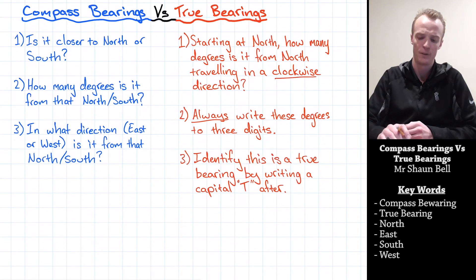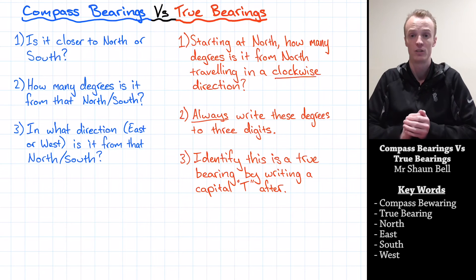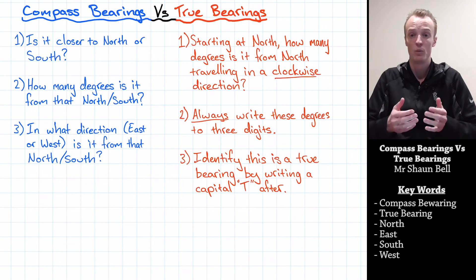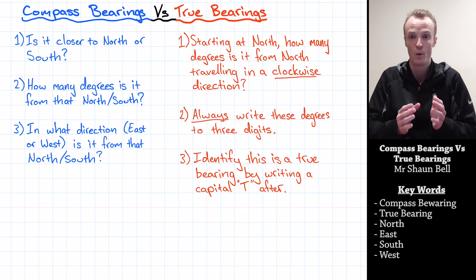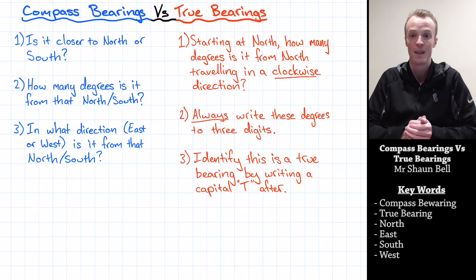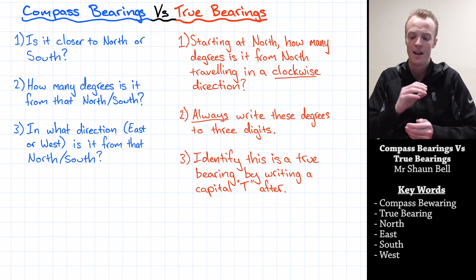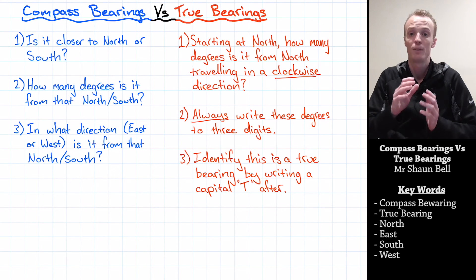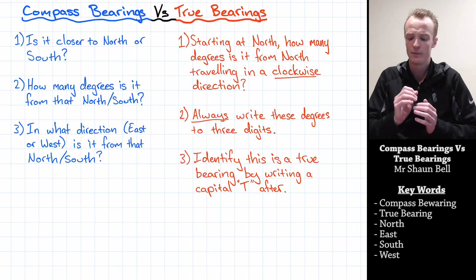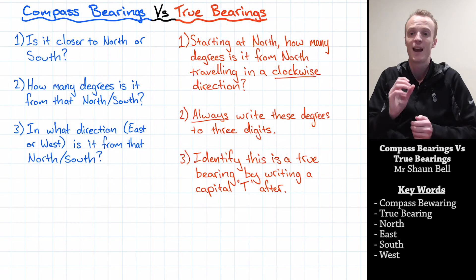Let's quickly revise compass bearings versus true bearings. For compass bearings, answer three questions: is it closer to North or South; how many degrees from that North or South; and in what direction — East or West — from the North or South indicated. For true bearings, always start at North, measure degrees clockwise, always write to three digits (first digit becomes zero if less than 100), and add a capital T afterwards to identify it as a true bearing.